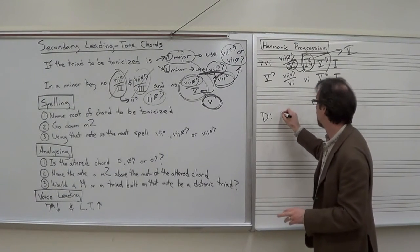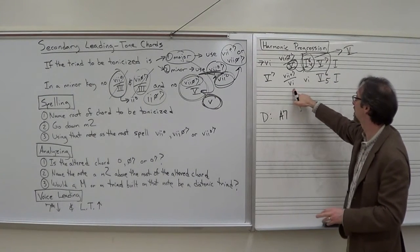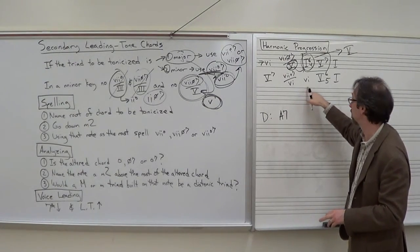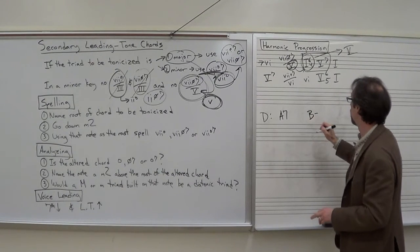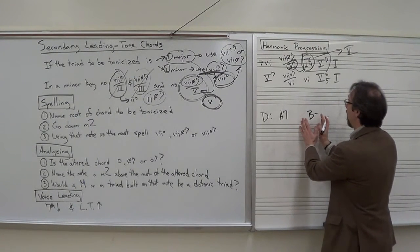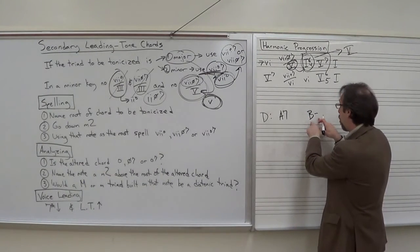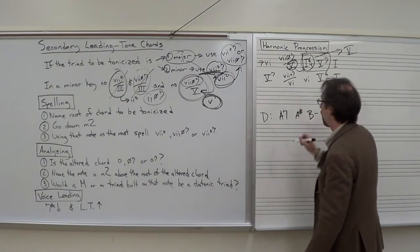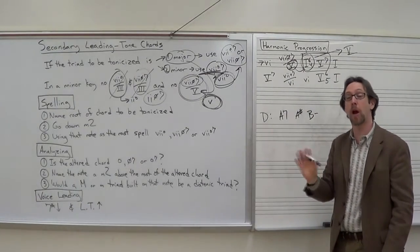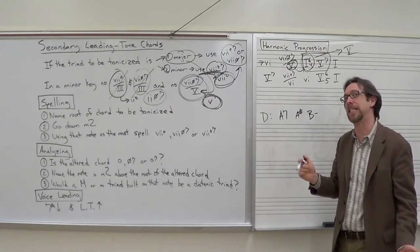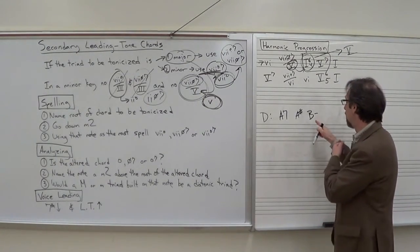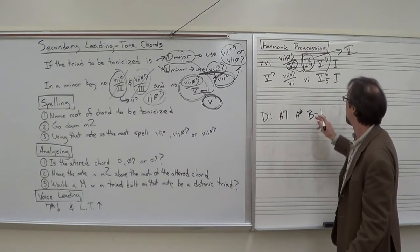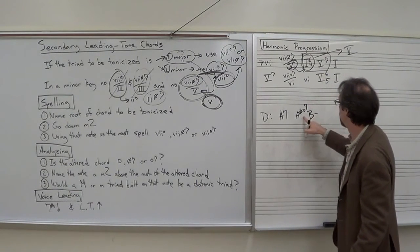5-7 in the key of D is an A7. 7 diminished 7 of 6, we always want to know where we're going, so let's do 6 first. 6 in D major is a B minor chord. What would be a 7 diminished 7 in the key of B minor or of B minor? Here's our B, we go down a half step to A sharp. It's not B flat. Enharmonics, you're not allowed to just change it to what's enharmonically easier for you to do. It actually has to be in that key. We have to say A sharp, we can't say B flat.